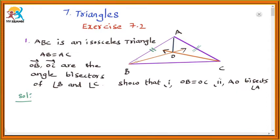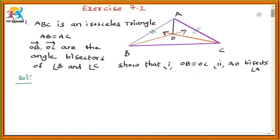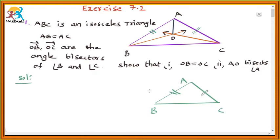To prove this, first of all we have to recall that in an isosceles triangle, two sides are equal, then their opposite angles are equal. We have to draw that figure first. Here, the sides AB and AC are equal, so their opposite angles — angle C and angle B — are equal. So AB is equal to AC means the opposite angle of AB is angle C, that is angle ACB, which is equal to the angle opposite to side AC, which is angle ABC.